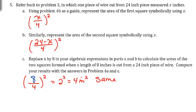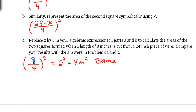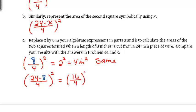Doing the same with the symbolic representation for the second square: (24 − 8)/4, then squared. That gives (16/4)², which is 4² = 16 inches squared. This is also the same as the result we got in part 4C.